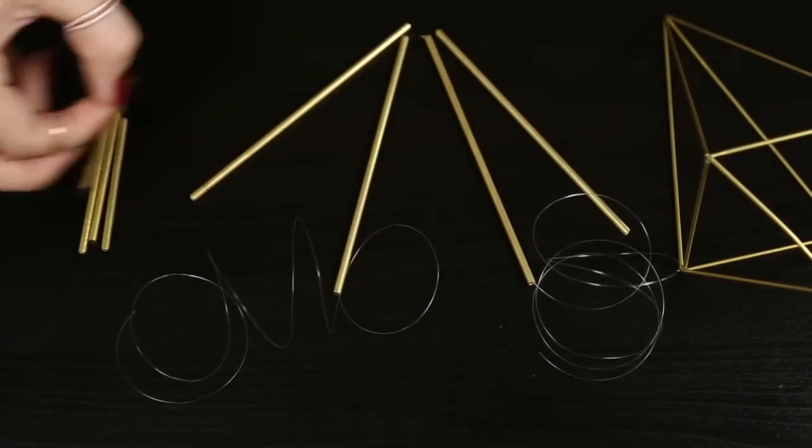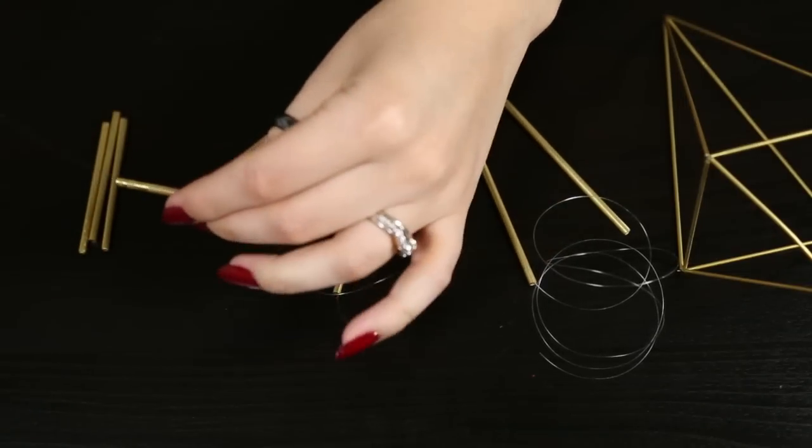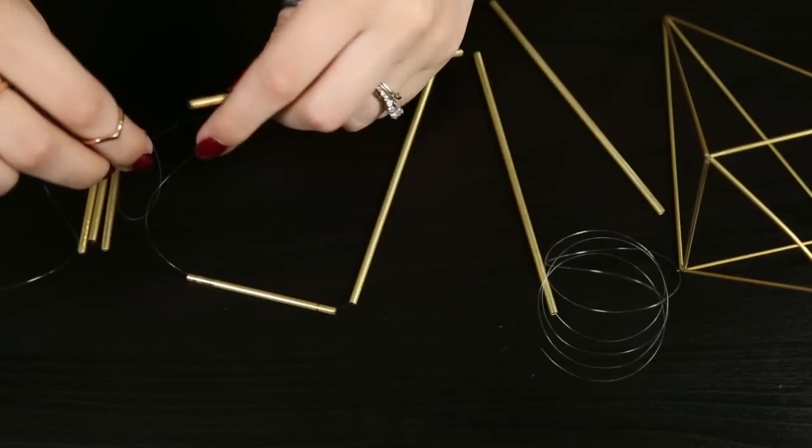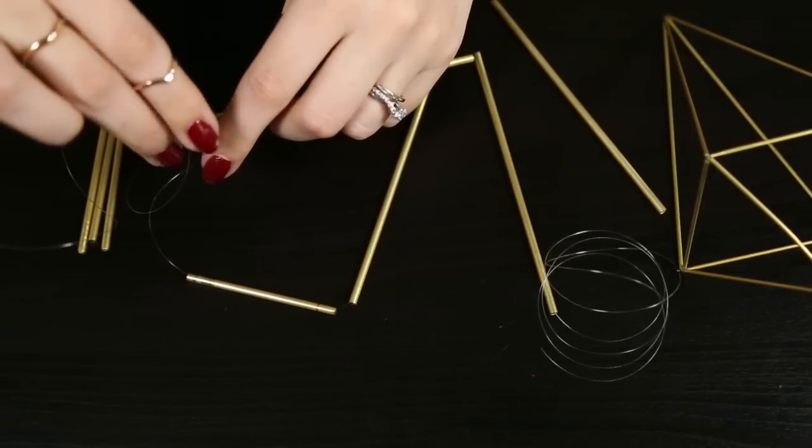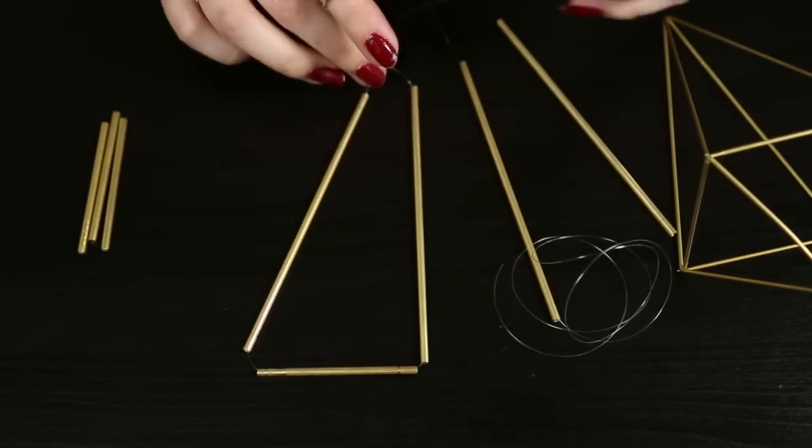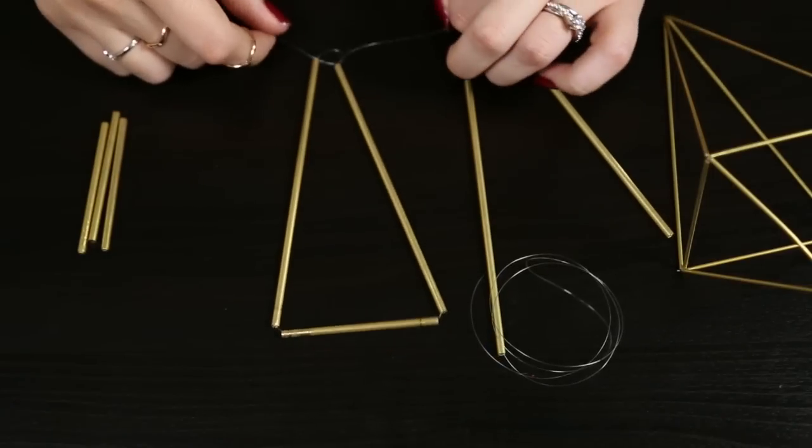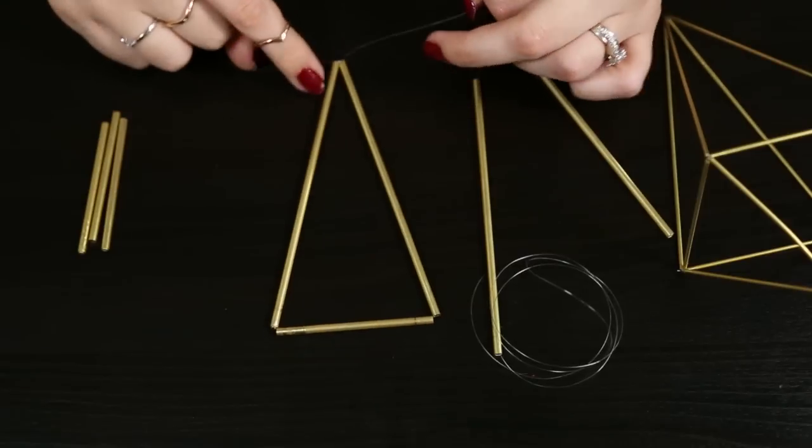And now I'm going to grab my second pipes. These are going to be the base of the triangles and I'm just going to thread this through. So once the base is through I'm then going to thread in the other portion of the triangle and I'm going to tie this off at the top. So make sure that when you tie this tie it in a knot and make sure that it is nice and snug.